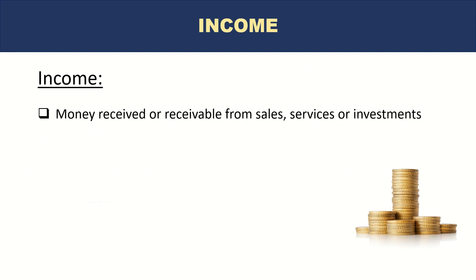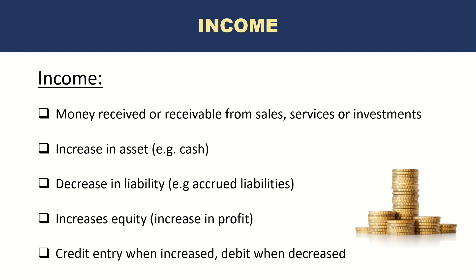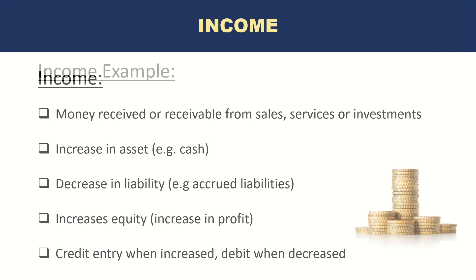Income is money received or receivable from sales, services, or investments. It increases assets — for example, cash — or decreases liabilities. For example, if a company records an accrued liability in January but the bill comes in lower than estimated, that difference is a reduction in liability and counts as income. Income increases equity or profits, and from the rules of debit and credit, income is a credit entry when increased and a debit when decreased.